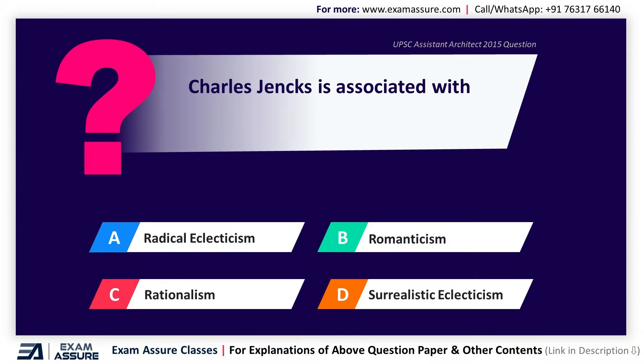Next question. Charles Jencks is associated with — Option A: Radical Eclecticism, Option B: Romanticism, Option C: Rationalism, Option D: Stylistic Eclecticism. The correct answer is Option A, Radical Eclecticism.